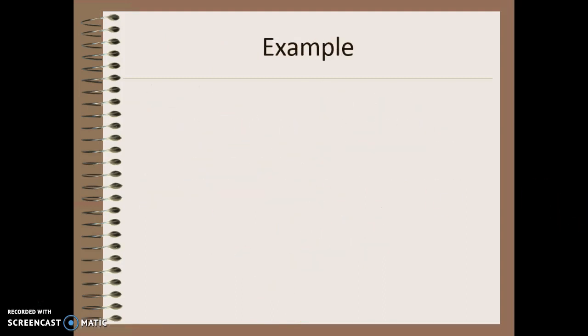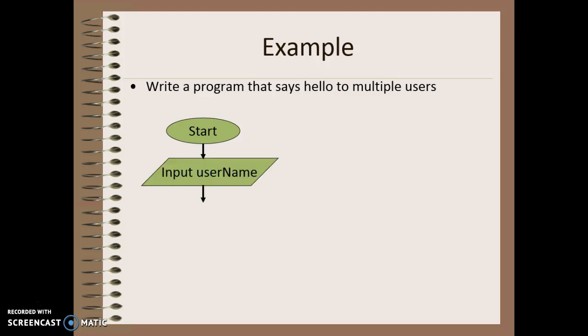We're going to write a program that says hello to multiple users. So again, we're going to start. The first thing we need to do is input the user's name, so we know who they are, and then output the word hello and what their name was.